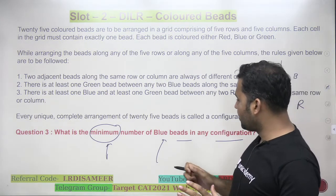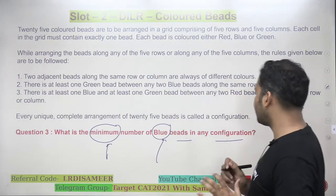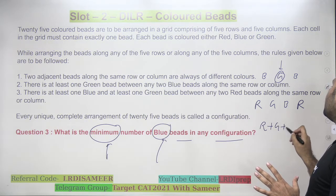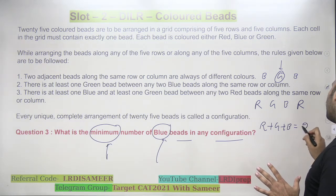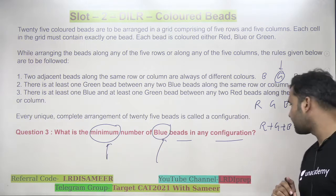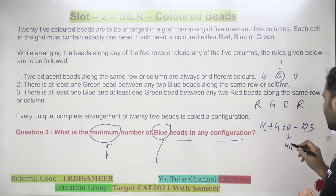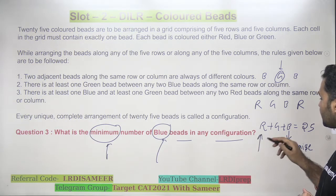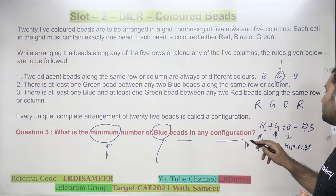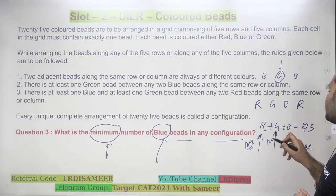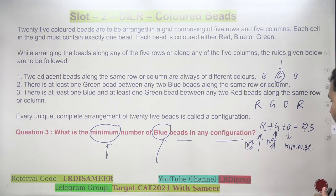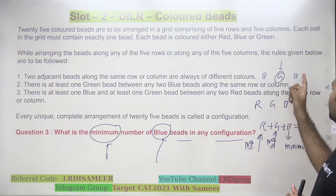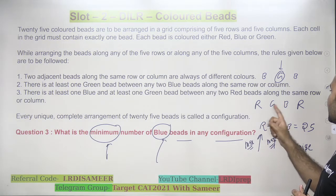Our concentration should be on minimizing the blue bead. It is fixed that the total number of red plus green plus blue beads used will be 25. If I want to minimize blue, logically I need to maximize the red and green. There are also conditions: between two blue beads there has to be one green, and between two reds there has to be one green and one blue.